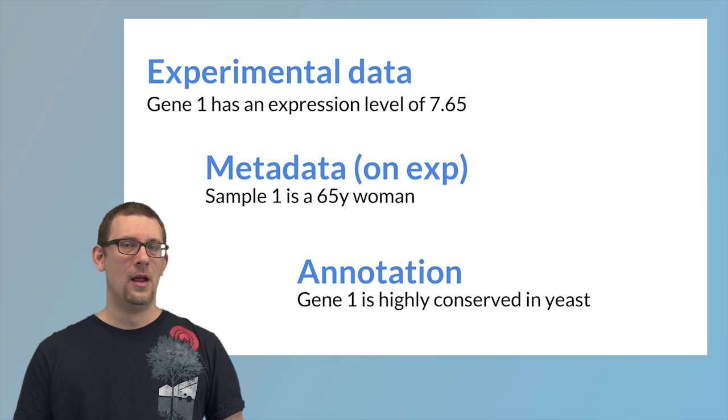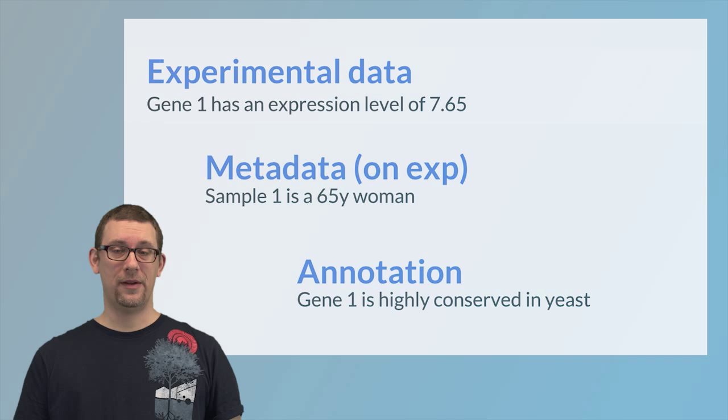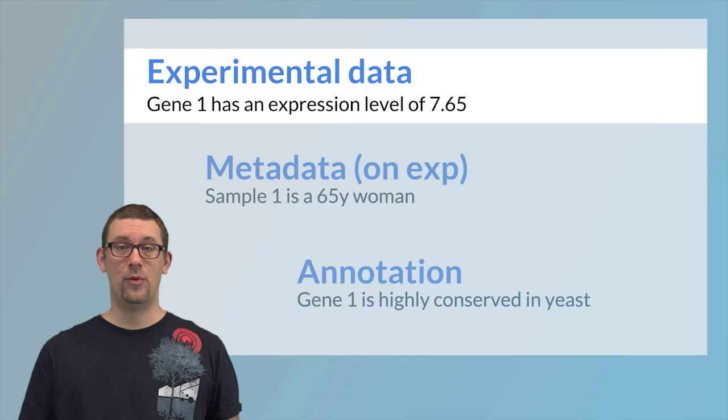In Bioconductor, we tend to think of data as consisting of one or three different types. There's experimental data, which is data that we have collected with some high-throughput experiments, for example, sequencing or microarray experiments.